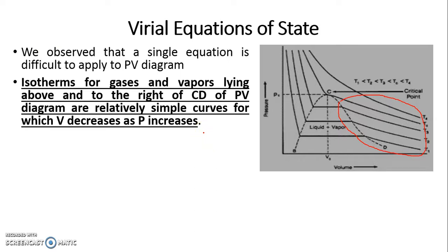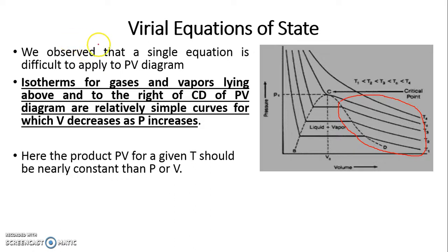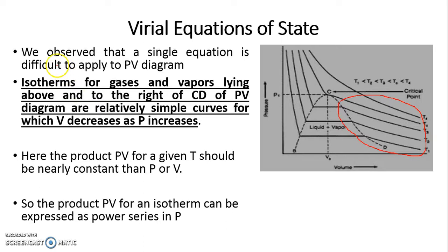Isotherms for gases and vapors lying above and to the right of CD of the PV diagram are relatively simple curves for which V decreases as P increases. Here the product PV for a given temperature should be nearly constant, then for only P or V. So we try to relate product PV.